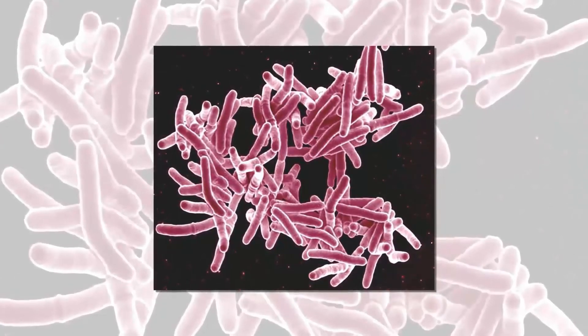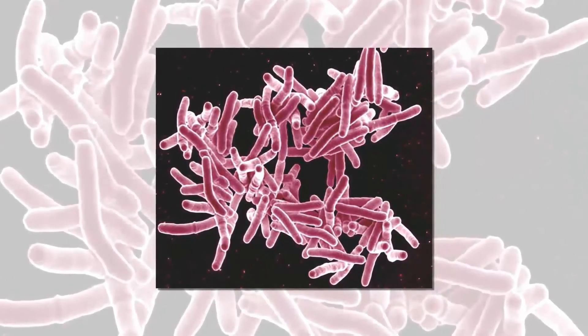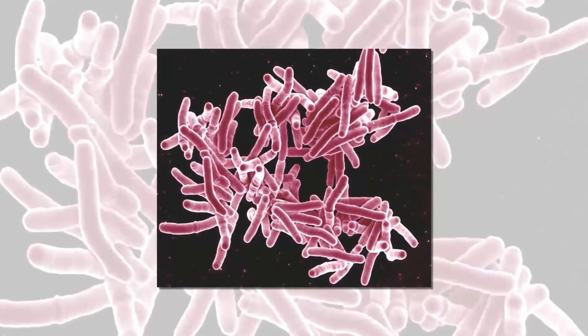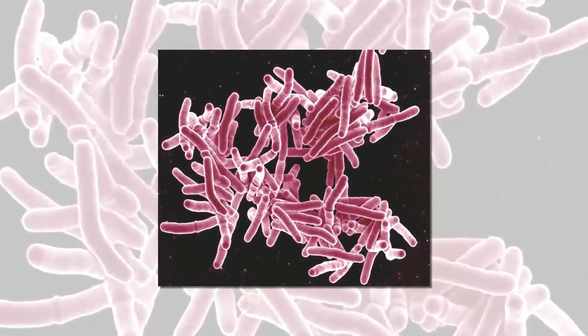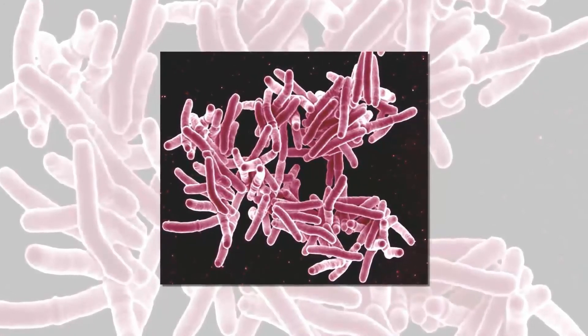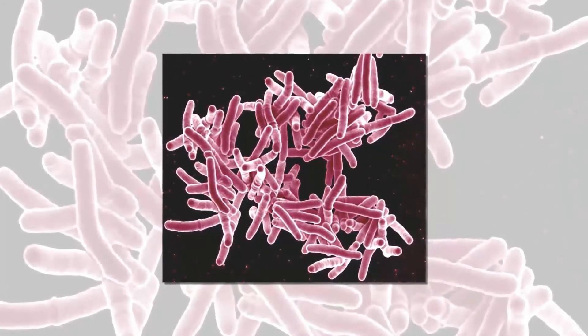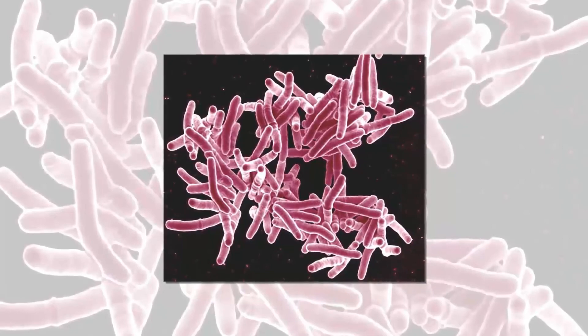The most common medications used to treat tuberculosis include: isoniazid, rifampin, brefidin, bremitain, ethambidol, miambidol, and pyrazinamide.